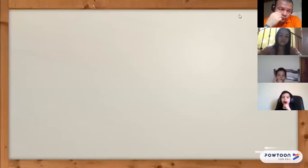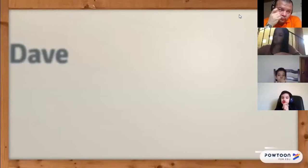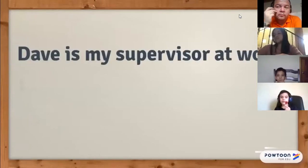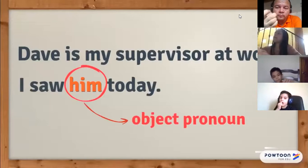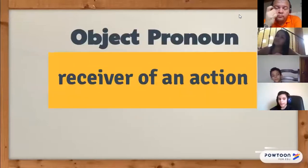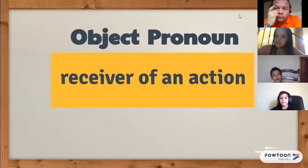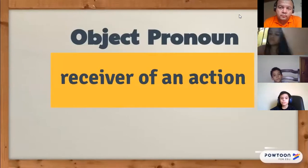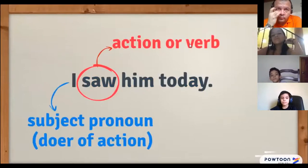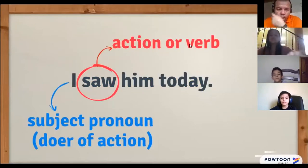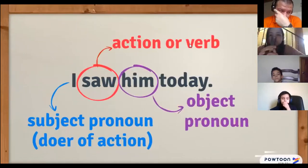Now that you've understood what a subject pronoun is, let's look at what an object pronoun is. Take a look at this example: 'Dave is my supervisor at work. I saw him today.' In this example, 'him' is an object pronoun. An object pronoun is the receiver of an action or verb. In this case, the action is 'saw.' The subject pronoun 'I' is the doer of the action, and 'him' is the object pronoun that receives that action.